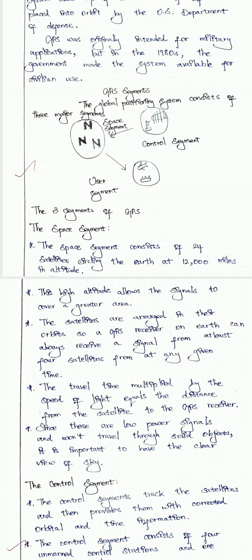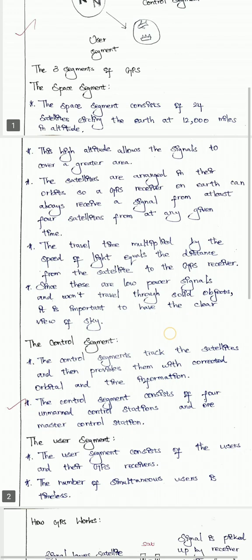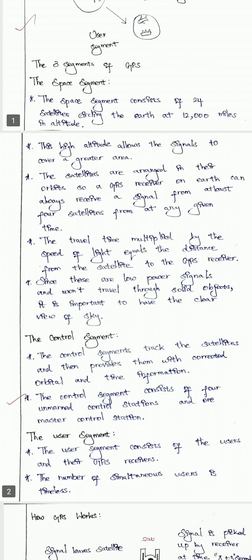First, the space segment. It consists of 24 satellites circling Earth at 12,000 miles in altitude. At Earth level, 12,000 miles is the MEO orbit where the space segment satellites are located.